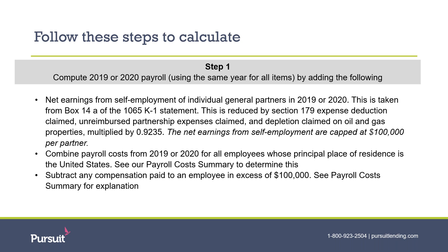Now that we've gathered the necessary documents for the application, it is time to calculate the loan amount. This is one of the more complex loan amount calculations. The main number we are going to take is box 14A from the K-1 statement of the 1065. This must be reduced by any Section 179 expense deduction claimed, unreimbursed partnership expenses claimed, and depletion claimed on oil and gas properties. While these exceptions are somewhat rare, it is important to use the K-1 statement to reduce by this amount.